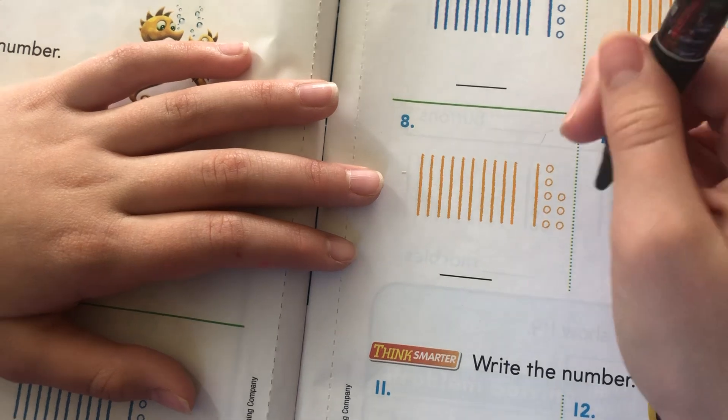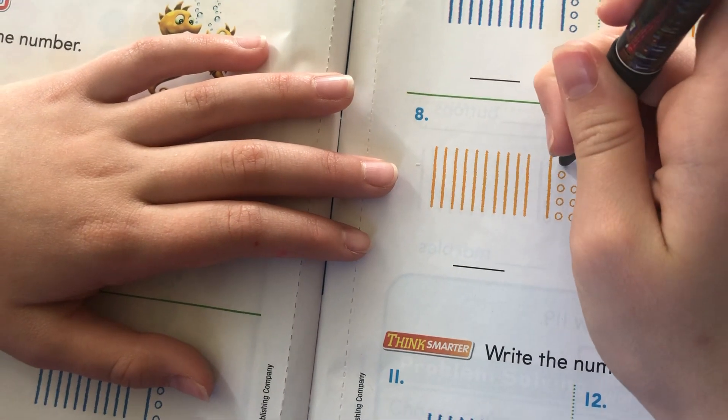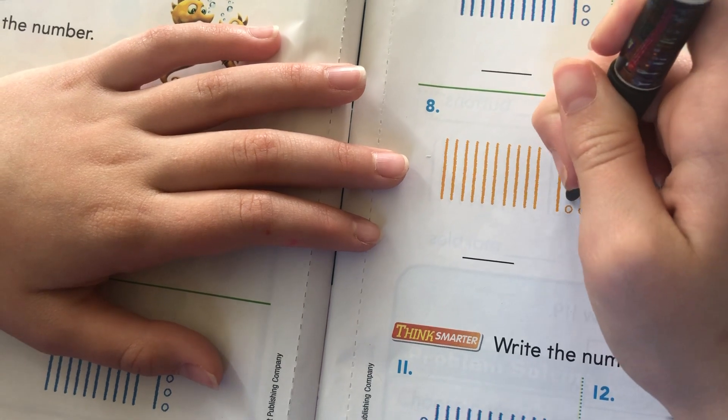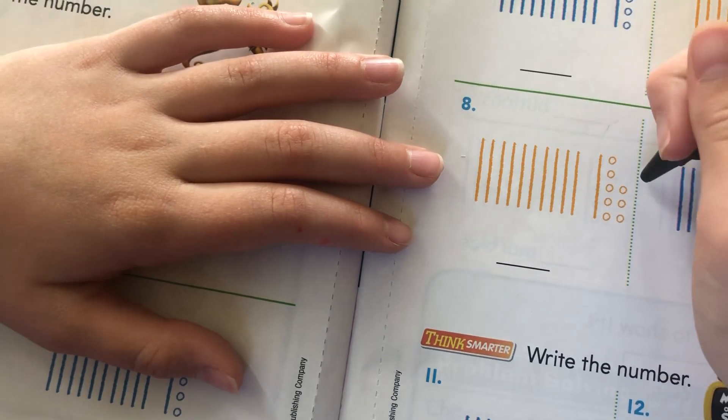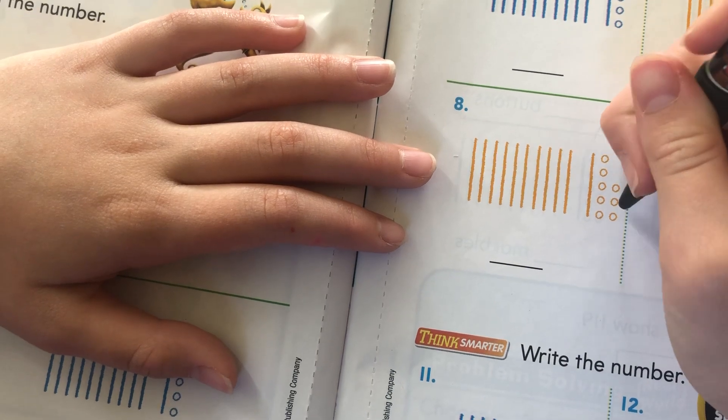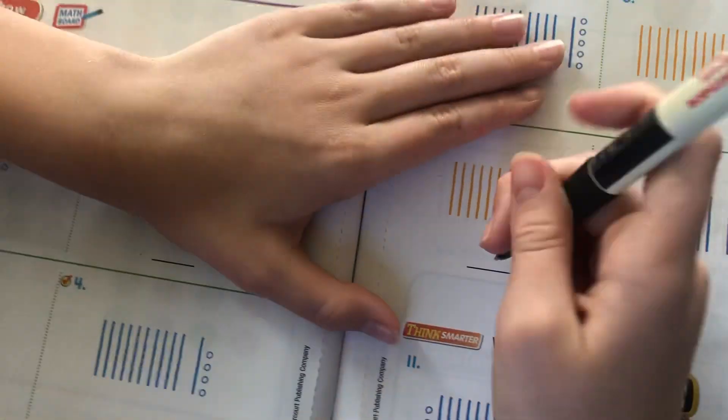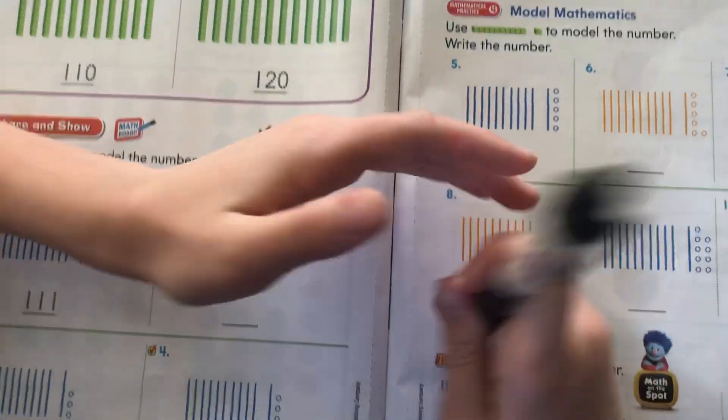And then, we have all these ones. So, let's count these. 110, 111, 112, 113, 114, 115, 116, 117, and 118. So, all of these right here is 118.